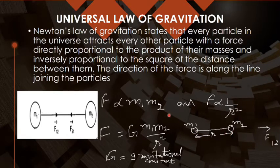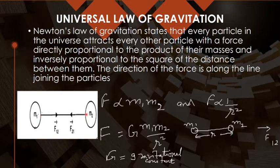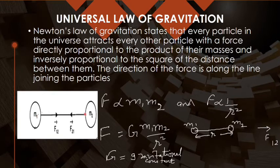Force is a vector quantity, so we must also talk about its direction. When an object is falling towards the earth, the force on that body by the earth is towards the earth — away from that body. The force on the first body due to the second body is towards the second body, and the force on the second body due to the first body is towards the first body. These are denoted F₁₂ and F₂₁, and the force acts along the line joining the two particles m₁ and m₂.